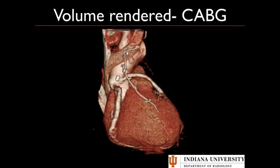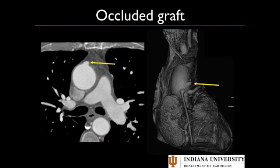Volume rendered images are most valuable in coronary artery bypass graft cases, because they provide an easy lay of the land. You can see the LIMA graft, clips along side branches, and two aortic grafts. You may not be able to tell whether they're saphenous vein or radial artery grafts, but it nicely shows how many grafts you have and can even reveal an occluded graft — such as a nubbin of an occluded graft. Otherwise, volume rendered images have no real value and should not be used to look for stenosis.